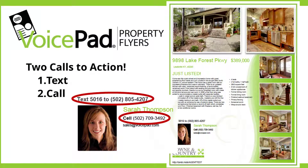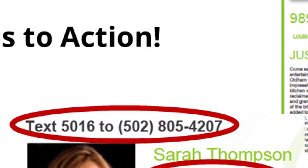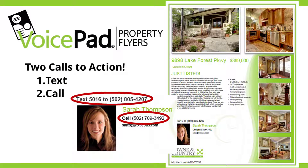There are a couple of unique attributes I want to bring to your attention. There are two calls to action on flyers. We believe very strongly that the single call to action of calling the listing agent is probably not the best one. You'll notice two circles — there's the selling agent's phone number, but you'll also notice: text 5016 to 502-805-4207. That would be your VoicePad phone number. When prospects text, they just want to see the photos or learn more. You as the listing agent will be notified of their name, their phone number, the property of interest, and that they did this off of a flyer. So it has wonderful tracking capabilities. This call-to-action text feature is something you very seldom see on flyers. We think it's important and a quality lead that should be responded to as such.